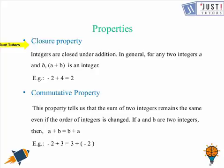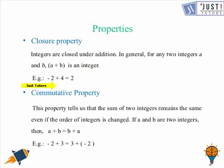Now let's move on to some properties. The first property is the closure property, which states that integers are closed under addition. In general, for any two integers a and b, a + b is always an integer. For example, if a = -2 and b = 4, the sum is 2, which is an integer. It doesn't matter if you swap the digits — 4 + (-2) is also 2, which is still an integer.